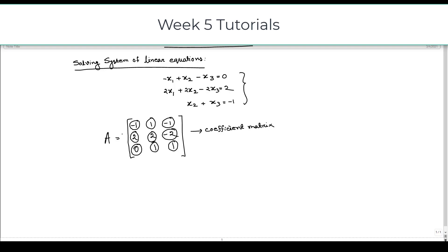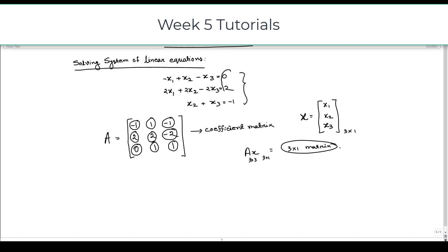We generally denote the coefficient matrix by A. The variables are written as a column matrix x = [x1, x2, x3]. Since A is a 3×3 matrix and x is a 3×1 matrix, A times x gives a 3×1 matrix. The right-hand side vector B is [0, 2, −1], giving us the form Ax = B, where A is the coefficient matrix and B is the right-hand side of the equations.